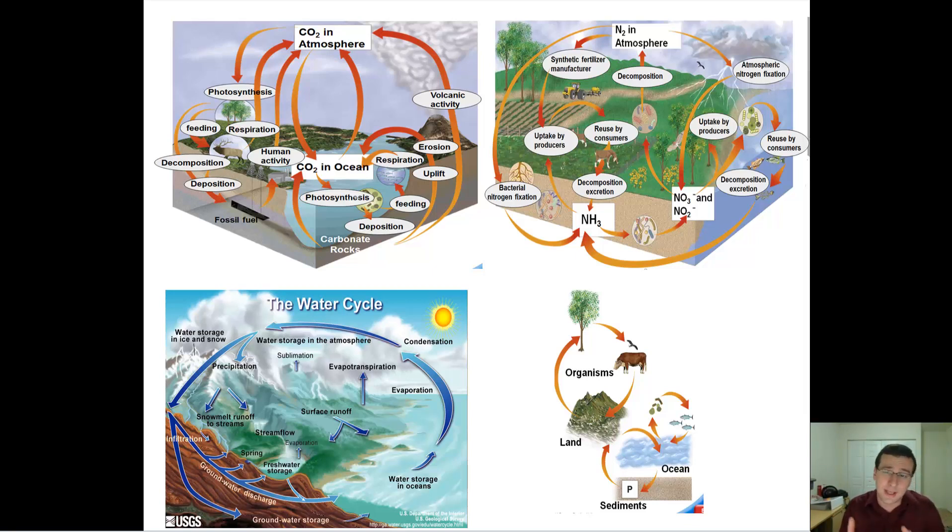But since phosphorus is a non-gaseous element, ecosystems rely on a very slowly cycling procedure and on the luck of the phosphorus coming to that area, which is unevenly distributed.